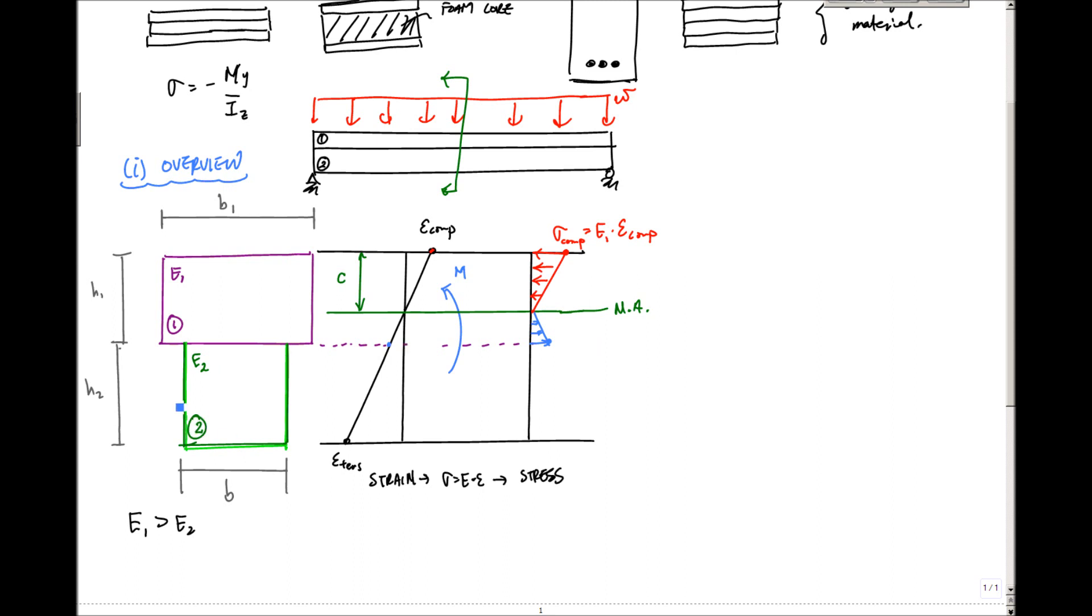Then all of a sudden, I get to material two right here. Material two has a smaller modulus of elasticity. And all of a sudden, what's gonna happen is because I have the same strain value at this point right here, but I'm multiplying by a different or a lower modulus of elasticity, I'm gonna have this discontinuity. I'm gonna have this step where my stress value will start, may drop down to here, and then I will continue linearly all the way down to here. And this would be sigma tension right here, which is essentially E2 times the strain in tension at this point down here.